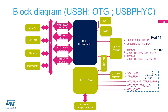In this block diagram, the USB OTG host controller core is shown at the top. It can be used with both ports of the HS, or high-speed PHY. If desired, the second port can be controlled by the OTG controller, which also has unique access to the FS, or full-speed PHY.